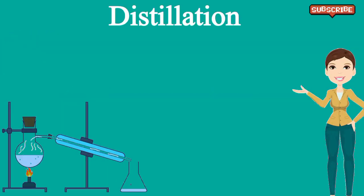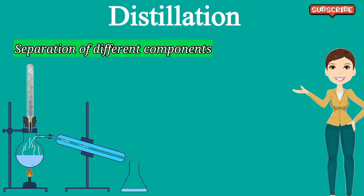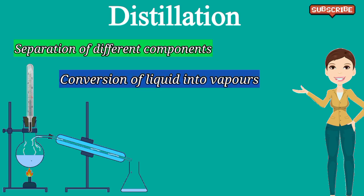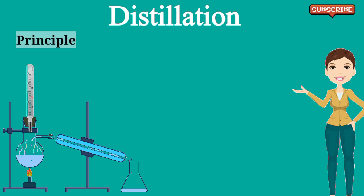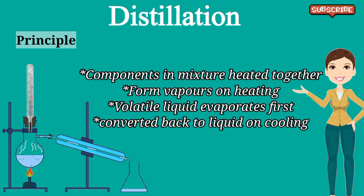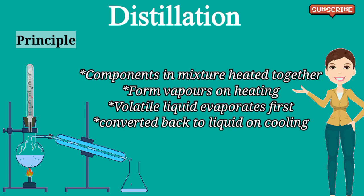Distillation is a process involving the separation of different components by converting a liquid into vapor, and then the vapor is condensed back to liquid form. The components in a mixture having enough difference in their boiling points are heated together. These are miscible liquids that form vapor on heating, and these vapors are converted back to liquid form by cooling. The volatile liquid evaporates first and can then be recovered by cooling in liquid form.